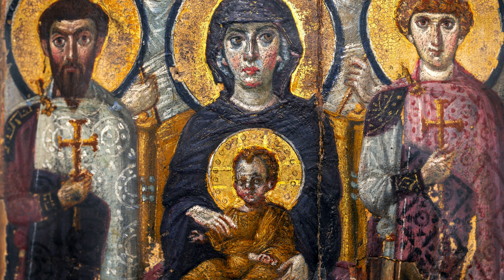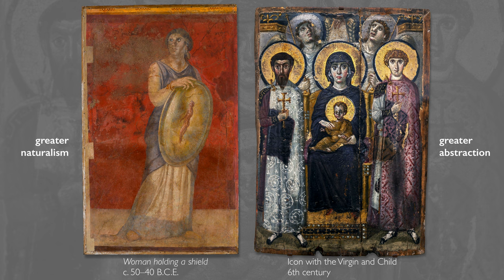Art historians describe this as the coming together of two different styles: the illusionistic style left over from ancient Greek and Roman art, where the figures are rendered in three-dimensional form, where we see foreshortening and movement, but then this more abstracted style that we see especially in the soldier saints on either side of Mary.